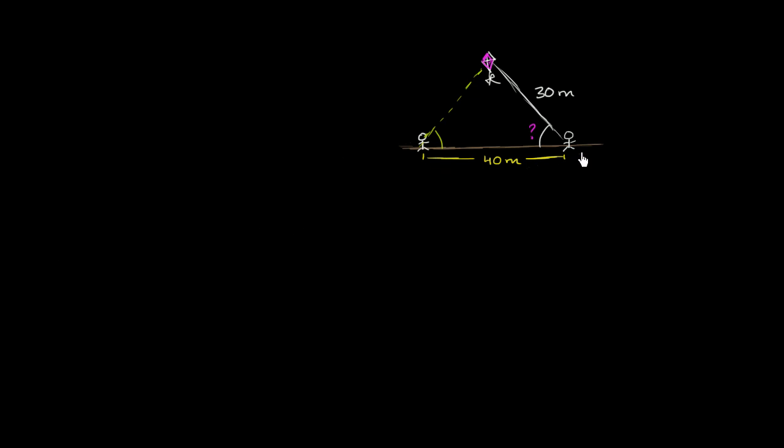Say you're out flying kites with a friend, and right at this moment, you're 40 meters away from your friend, and you know that the length of the kite's string is 30 meters, and you measure the angle between the kite and the ground where you're standing, and you see that it's a 40-degree angle.